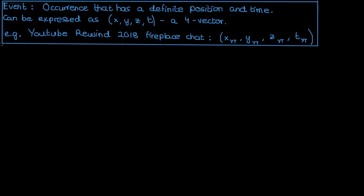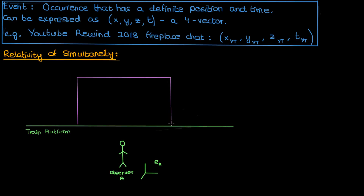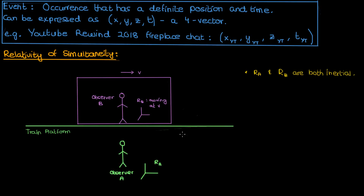Now that we've defined an event, let's talk about the relativity of simultaneity. Say we have observer A stationary on a train platform with reference frame R_A. There's also observer B standing in the middle of a train moving at velocity V, with reference frame R_B moving at that same velocity. Both reference frames are inertial — R_A is stationary and R_B moves at constant velocity — so we can apply the rules of special relativity here.